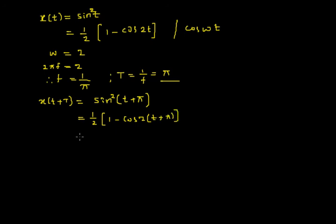So I can simplify this further. So I will take 2 into the inner bracket. So I would get cos(2π + 2t).